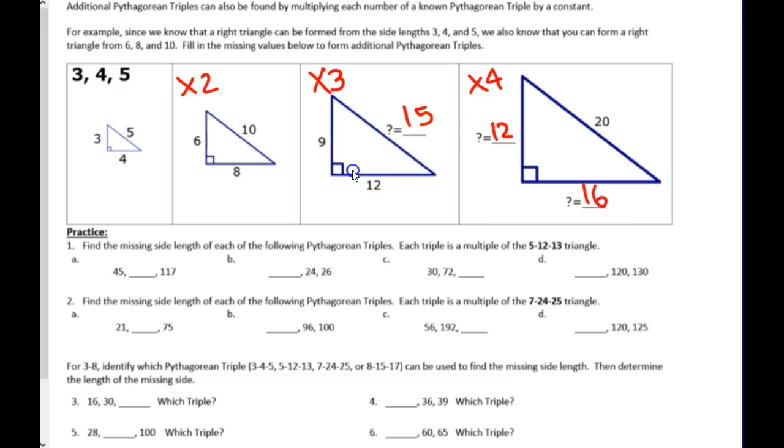So, again, all these make right triangles, and there's no decimals, because they are a multiple of a Pythagorean triple. Okay?